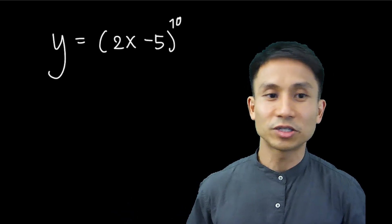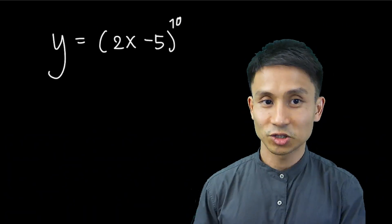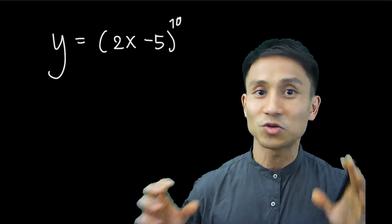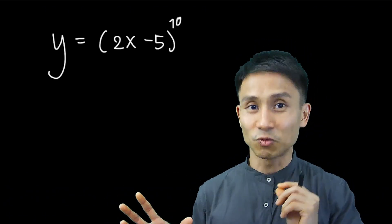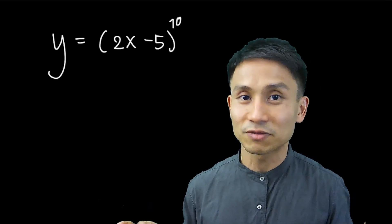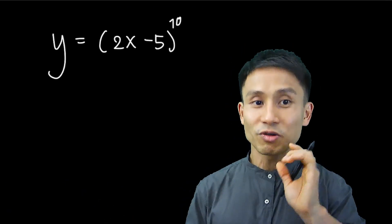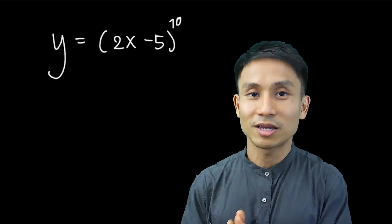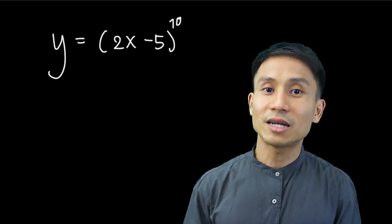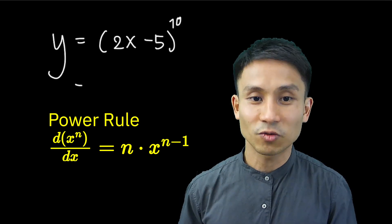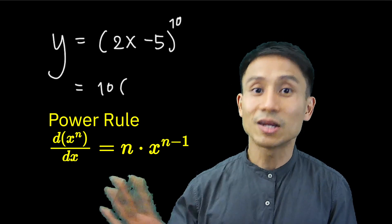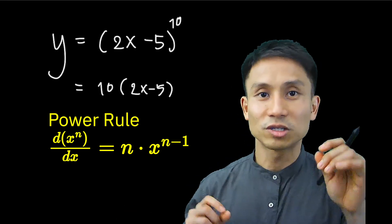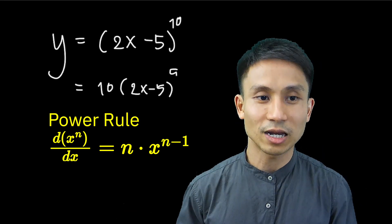The way we apply the chain rule is to look at the last operation first. Here we have some function raised to the power of 10. You need to look at 2x-5 as if it were a single x — we're not changing it, just treating it as one term. So we differentiate the outermost operation first: bring 10 down, keep the inner part 2x-5 the same, and subtract the power by 1 according to the power rule, giving us power of 9.